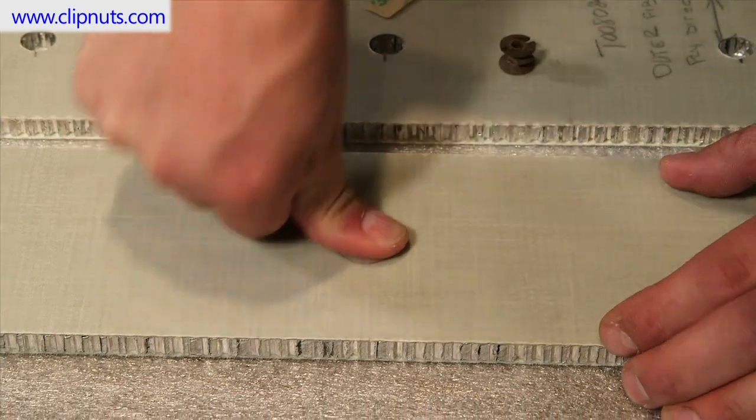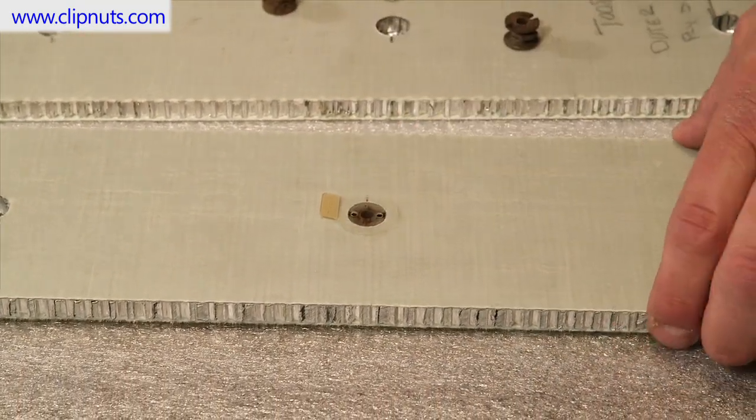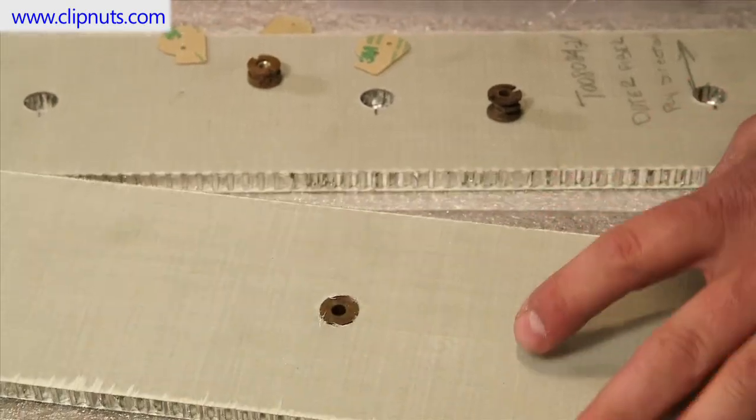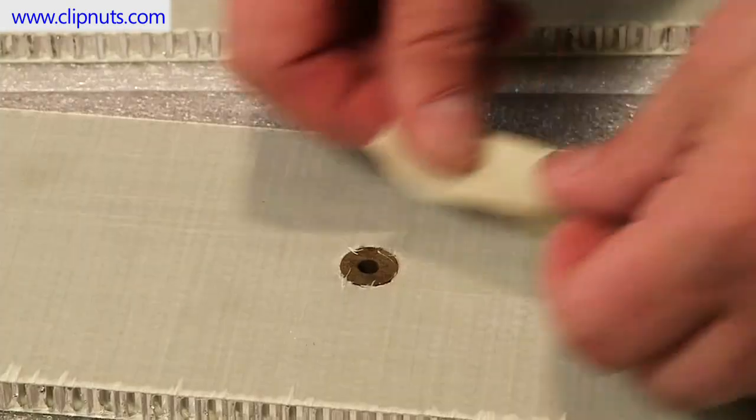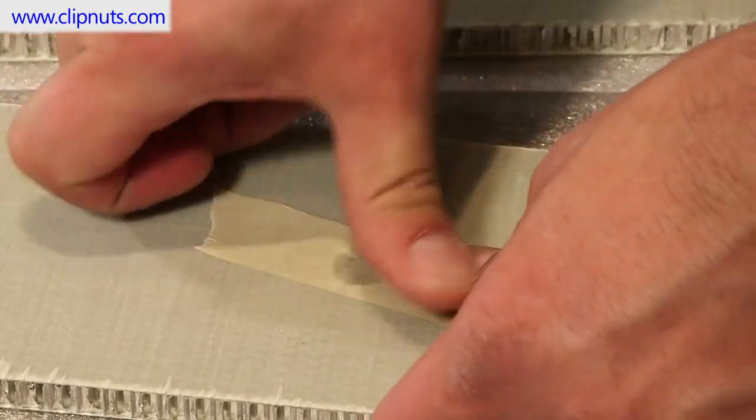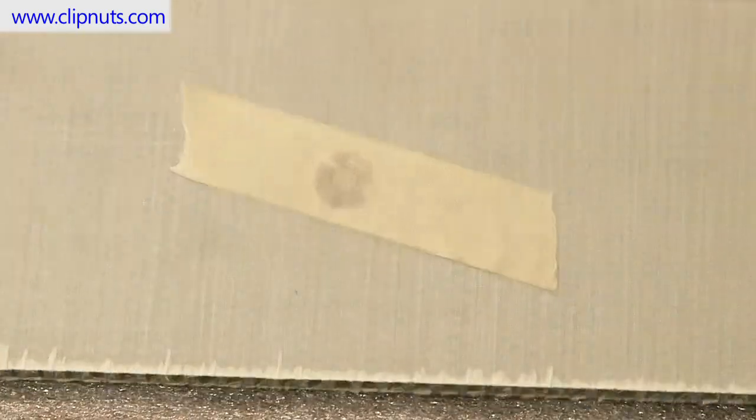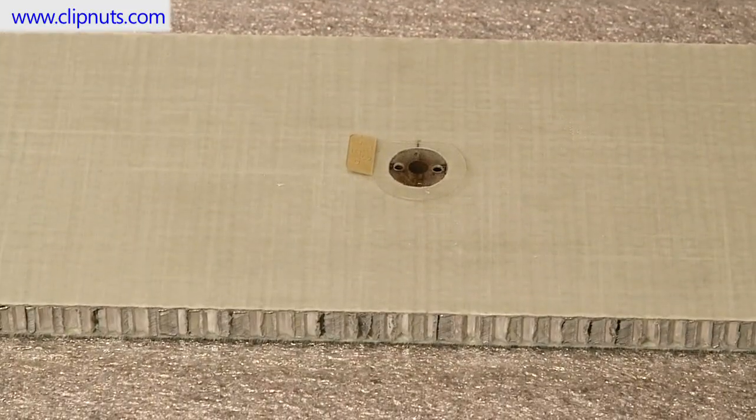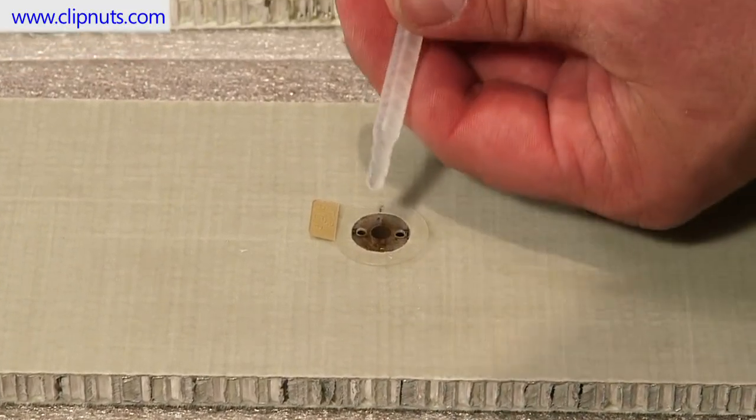Now, we take the insert with the installation tab attached and place it into the hole in the honeycomb panel. Since this is a through-hole installation, you should place masking tape on the back side of the panel, covering the insert to ensure that excess epoxy does not extrude from the back of the panel.